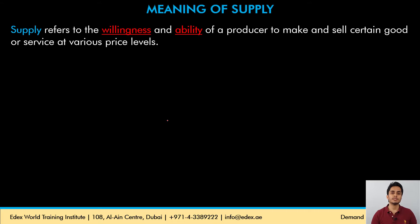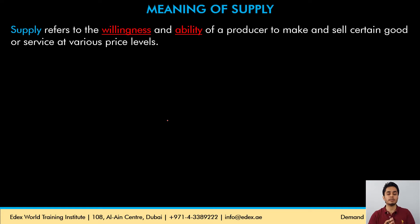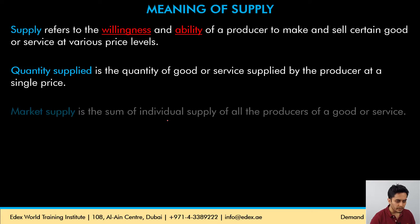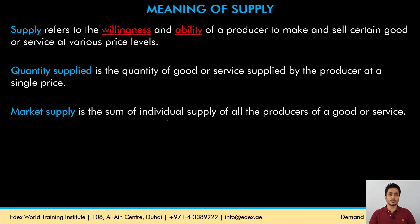Supply refers to the willingness and ability of a producer to produce and sell certain quantities of a product at different price levels or price points. Quantity supplied refers to the quantity that the producer is willing and able to supply at only a single price point. Market supply is the sum total of all the individual supplies of the producers in that industry or market.